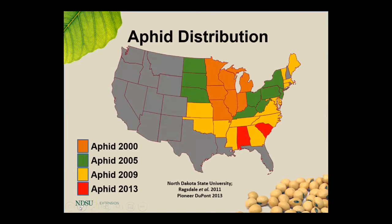This map is not showing when soybean aphid was discovered in each state. Rather, it's a snapshot every four or five years showing the progress. 2020 marks the 20th year since soybean aphid was found in the U.S. — it's a native pest of Southeast Asia, first discovered in parts of Minnesota and Wisconsin in the year 2000. Many researchers believe it was likely here before 2000 but at such low levels it went unnoticed. The map shows its spread through soybean-growing regions of the U.S., and Canadian provinces to the north have also been dealing with its impacts for quite some time.